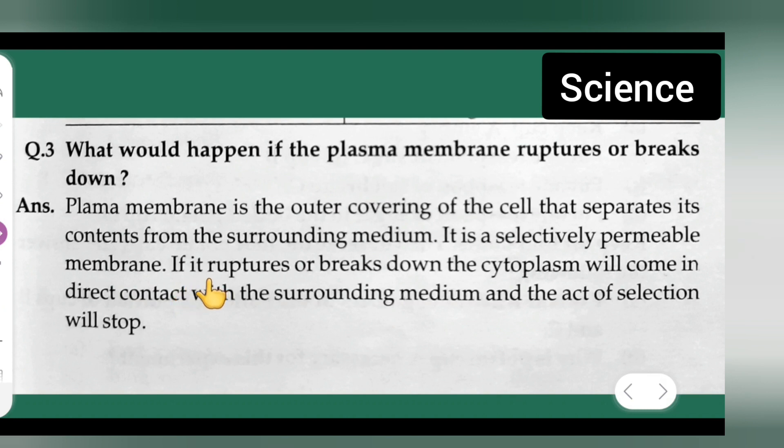If it ruptures or breaks down, the cytoplasm will come in direct contact with the surrounding medium and the act of selection will stop. I hope you understood the answer. Thanks for watching.